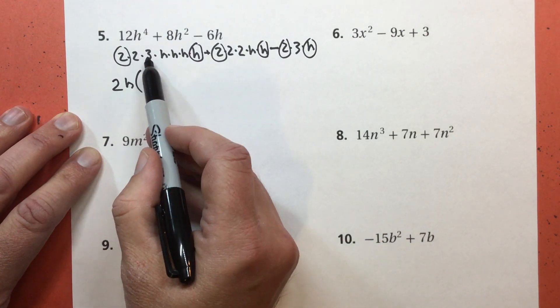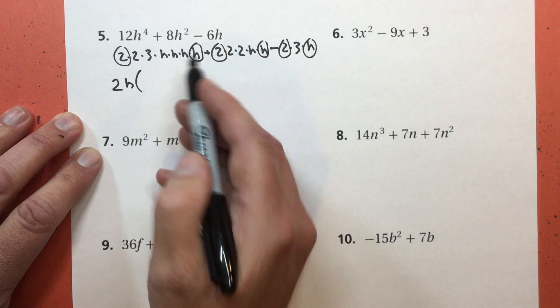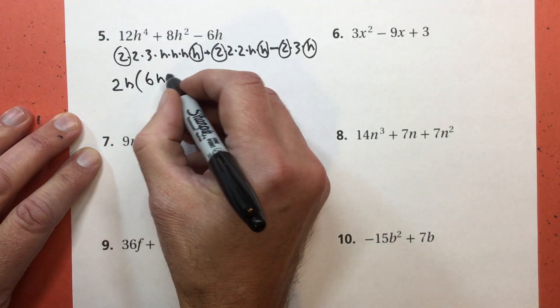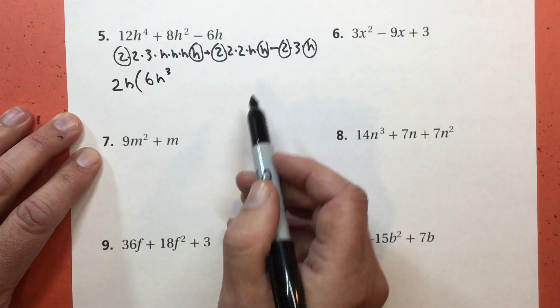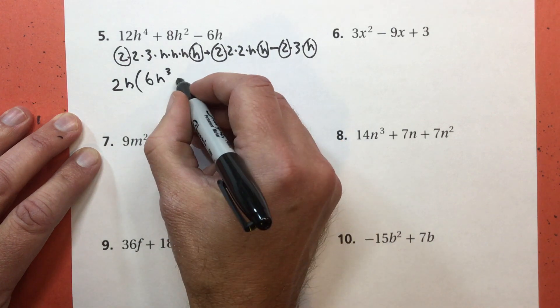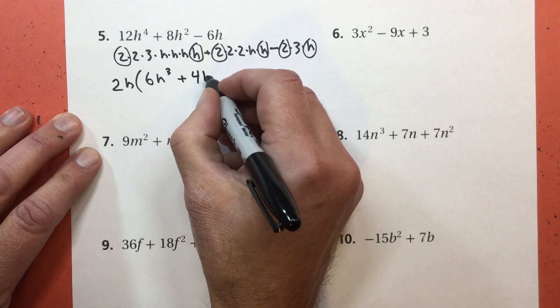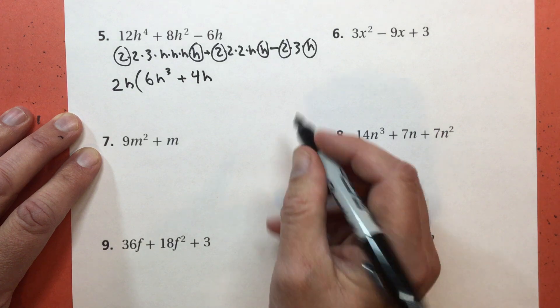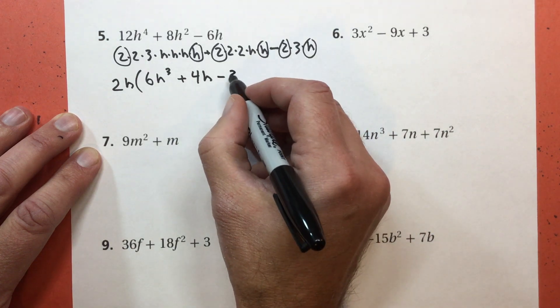What got left behind? 2 times 3 is 6. And I got 1, 2, 3, 6 H to the third power. 2 times 2 is 4 with another H. Plus 4H. And what got left in the last part? Subtract 3.